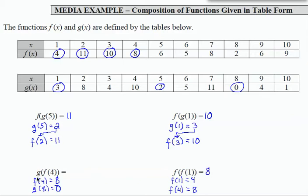And I realize I forgot to fill in the final result back here. g of f of 4 equals 0.